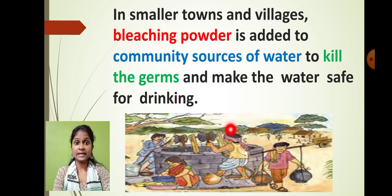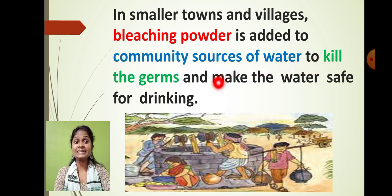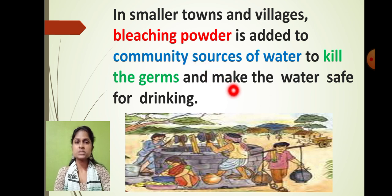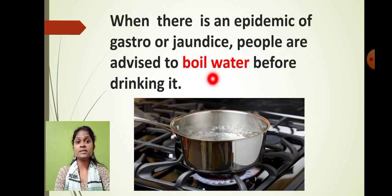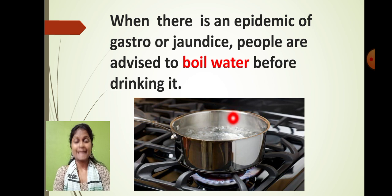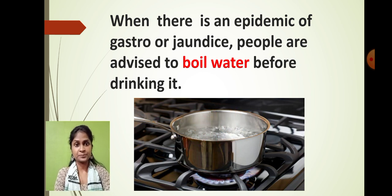You must have seen that bleaching powder is added to community water sources in villages. Bleaching powder kills germs and makes water safe for drinking. During rainy season, the water supplied by TMC has a typical smell because of bleaching powder added to prevent disease spread. Even if water looks clear, germs might be present. Always boil water before drinking — for at least 10 to 15 minutes on a low flame — so that all germs are killed.